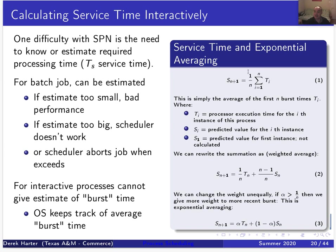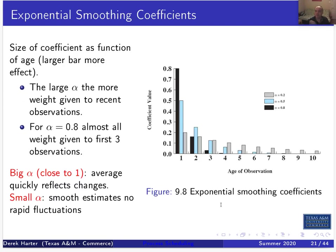You can rewrite this so you don't have to sum all the past history — you can use a weighted sum or weighted average. Using this formulation, you calculate the next estimated service time by adding in a weighted contribution of the last service time to update the next average service time. If you use unequal weighting, you get what's known as exponential averaging.